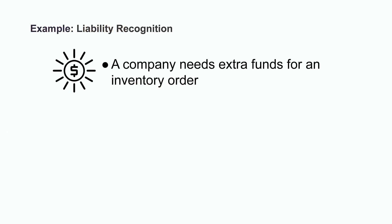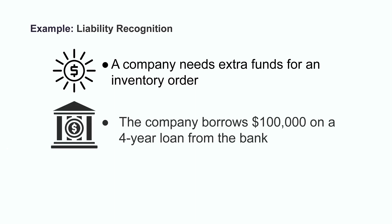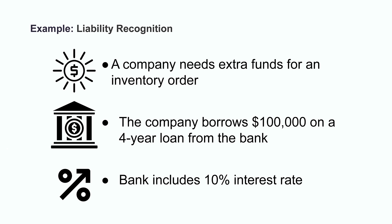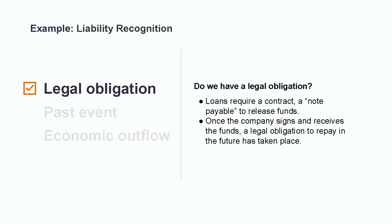To understand this a little better, let's look at an example of a company that needs some extra funds to fill an inventory order. So they go to the bank and they borrow $100,000 on a four-year loan. The bank has also included a 10% interest rate. Let's first check the criteria to see if this meets the recognition requirements for a liability. Number one, do we have a present legal obligation here? In order to obtain a loan from a bank, they would have required the company to sign a contract, otherwise known as a note payable, in order to release the funds. As soon as the company signs that document and receives the funds, a legal obligation to pay this back in the future has taken place, and therefore we have met this criteria.